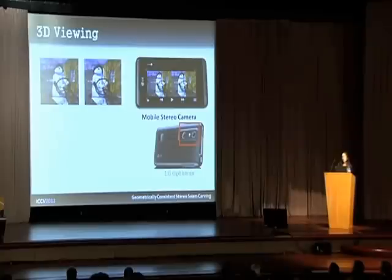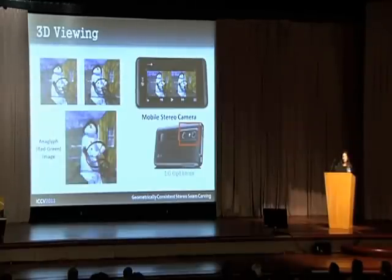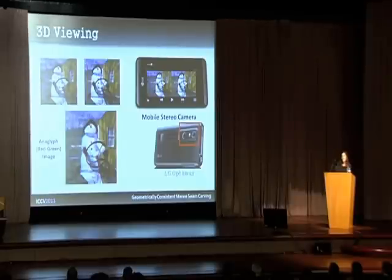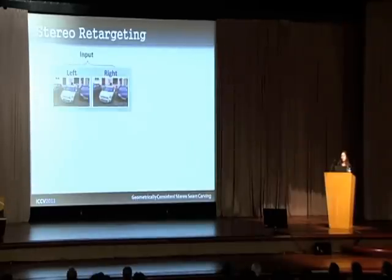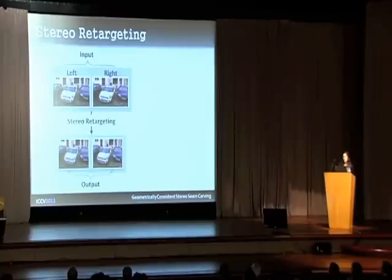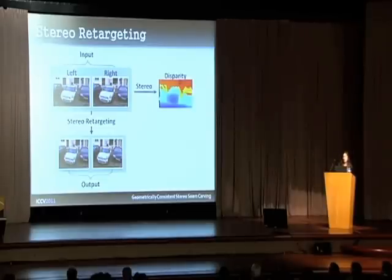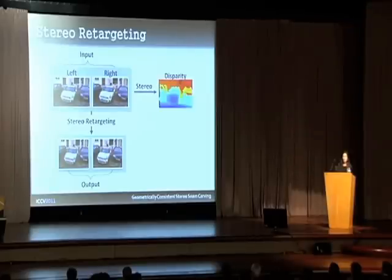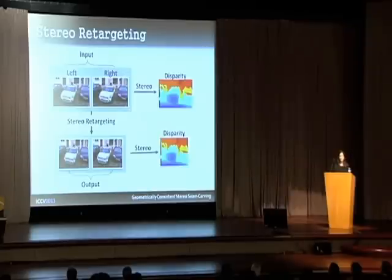Our output stereo pair can be viewed in 3D, for example as a red-green image, or can be further analyzed by existing computer vision algorithms that take stereo images as input. We consider the input to be a stereo pair and the output to be a retargeted stereo pair. Assuming we can perceive depth from the input images or compute a disparity map using existing stereo algorithms, the key feature of stereo retargeting is that we can do the same for the output pair as well.